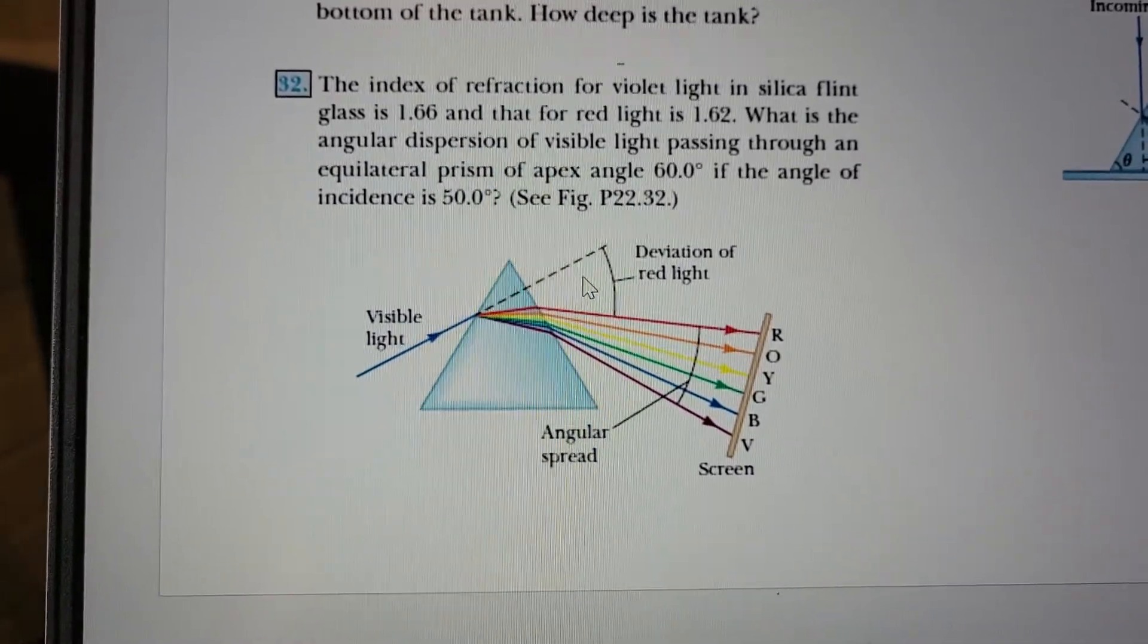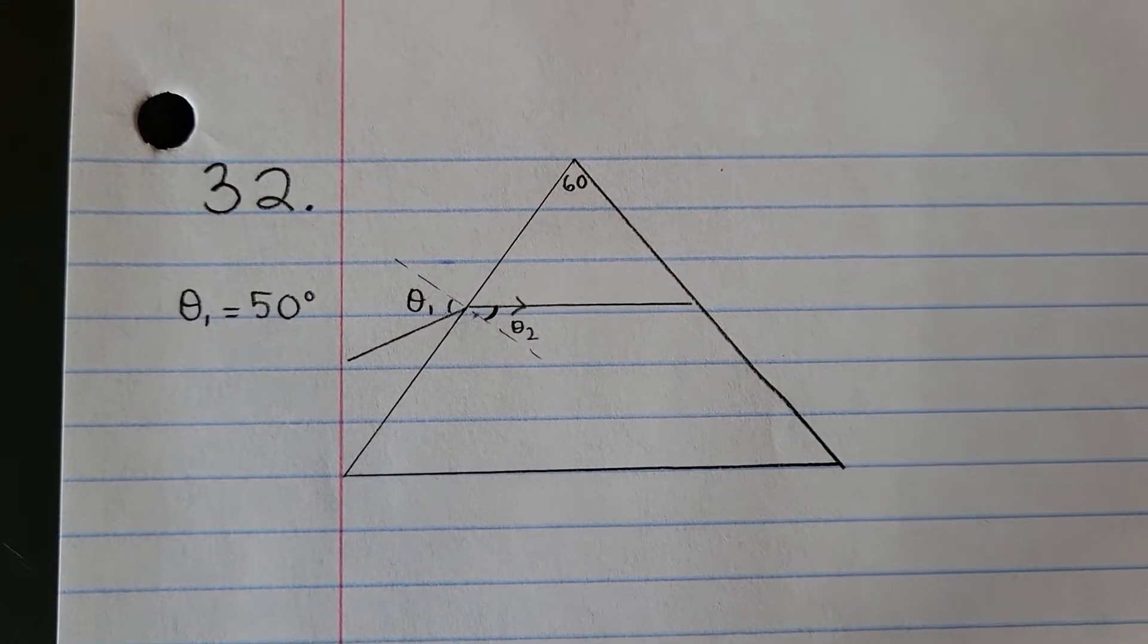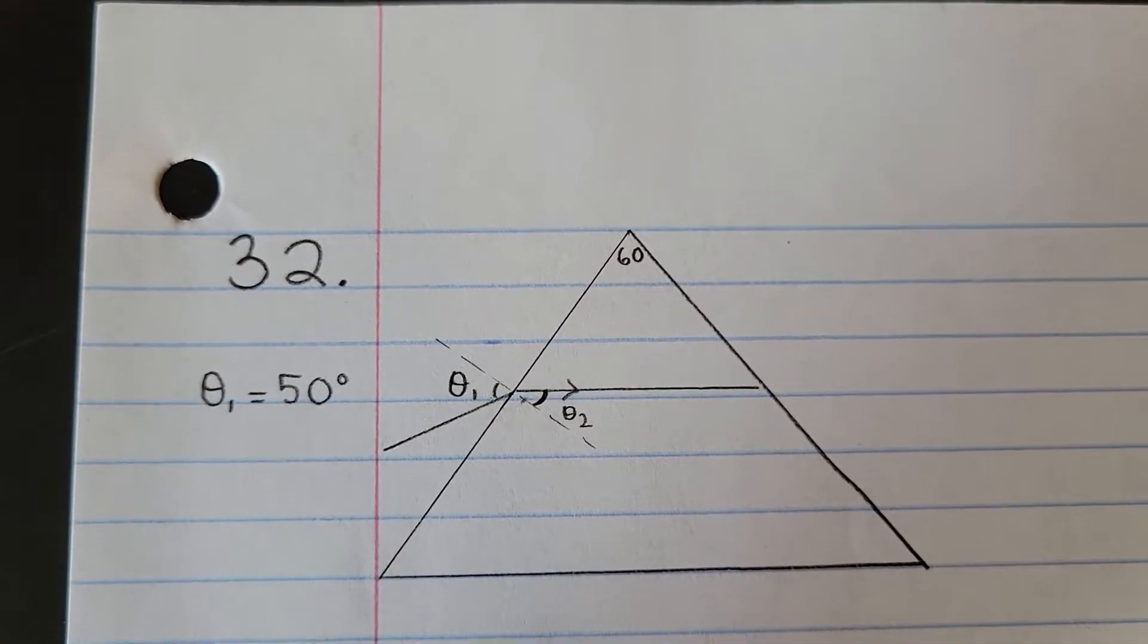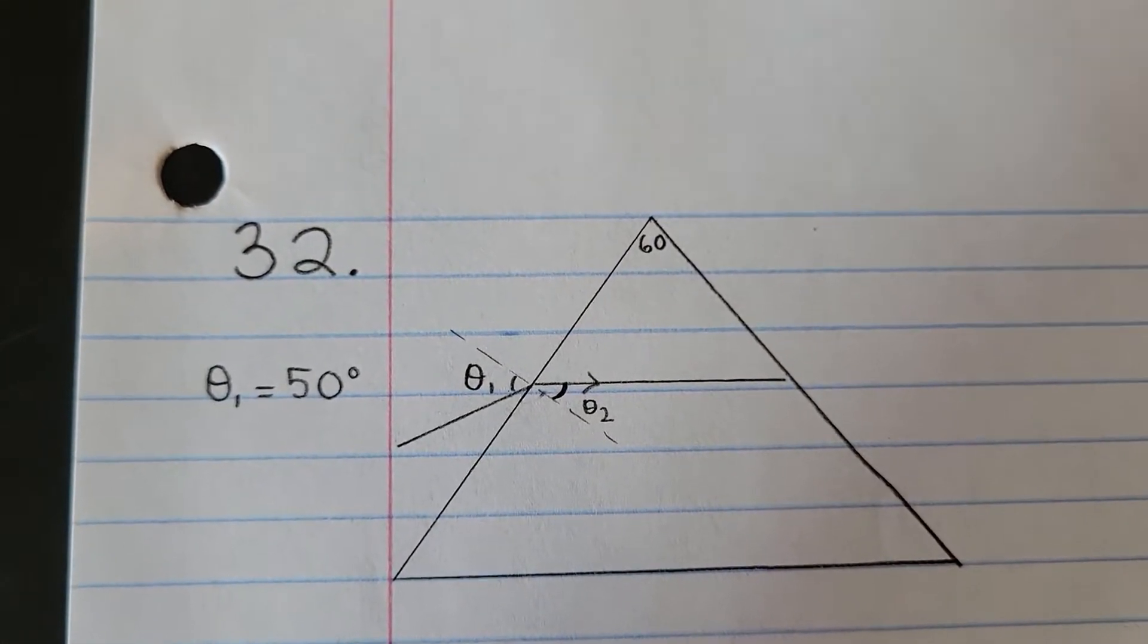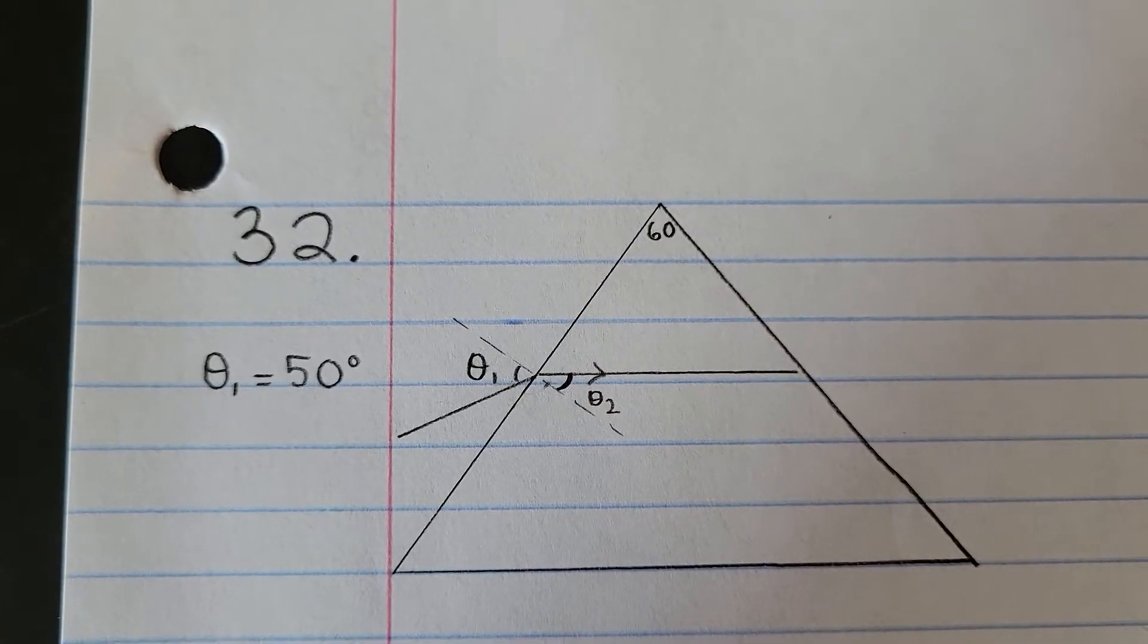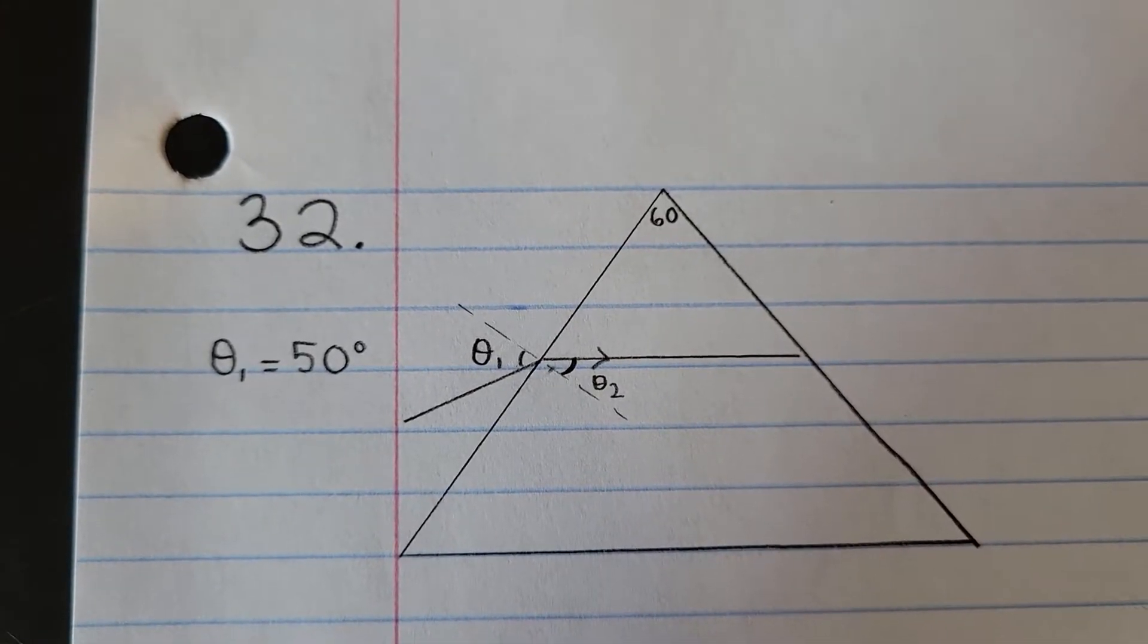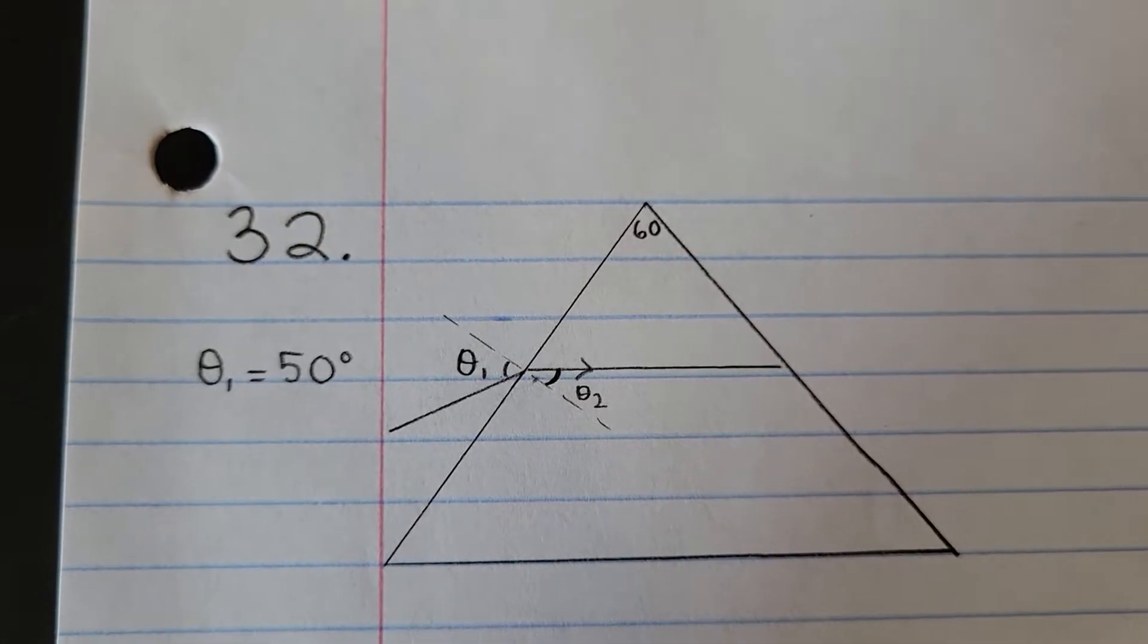So let's first draw out a picture. Alright, so I tried to draw a picture, and it's given that all the sides of the triangle are 60 degrees, so I just labeled that at the top because we're going to need that later. The theta 1 is the angle of incidence, that's 50 degrees. And then I just labeled theta 2, which is what we're going to solve for right now using Snell's law.